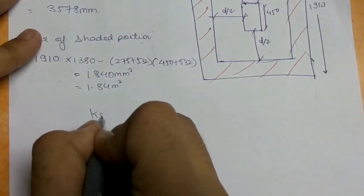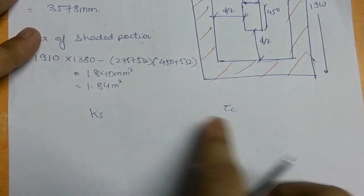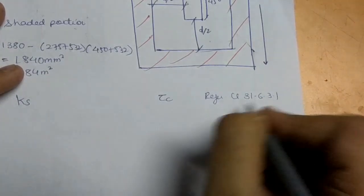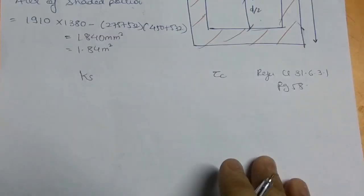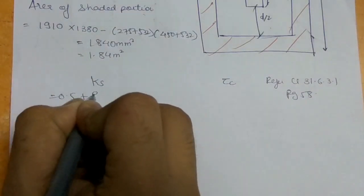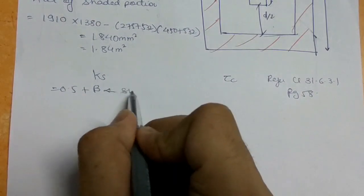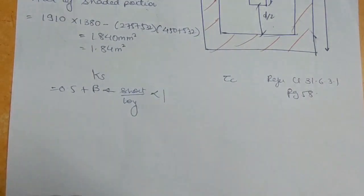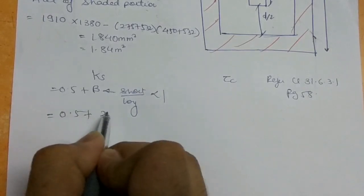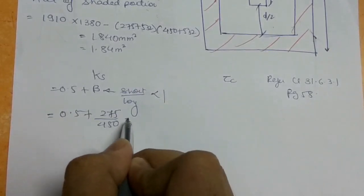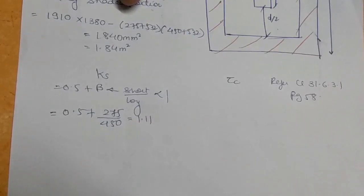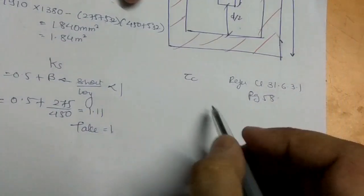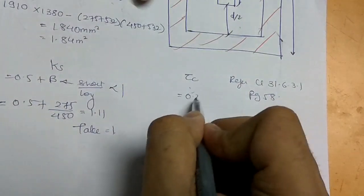Next, calculate ks and τc. Referring to IS code clause 31.6.3.1 on page 58, ks = 0.5 + β, where β is the short side of the column divided by the long side. That gives 0.5 + 275/450 = 1.11, which is greater than 1, so ks is taken as 1. τc = 0.25 × √fck = 1.25 N/mm².